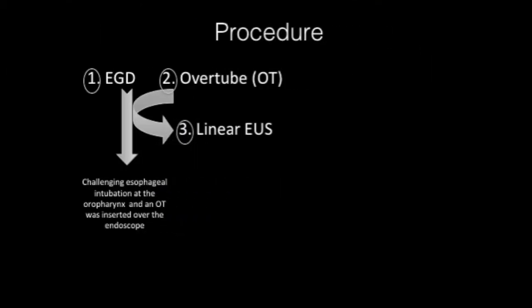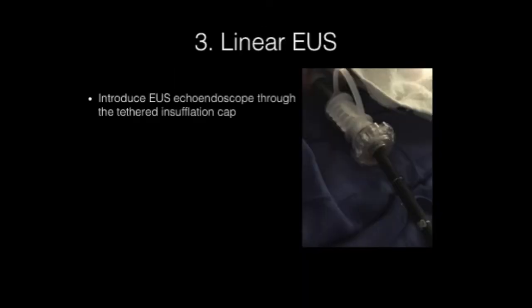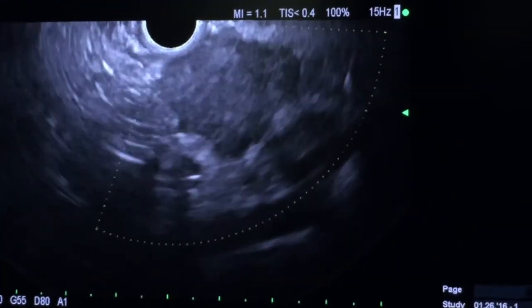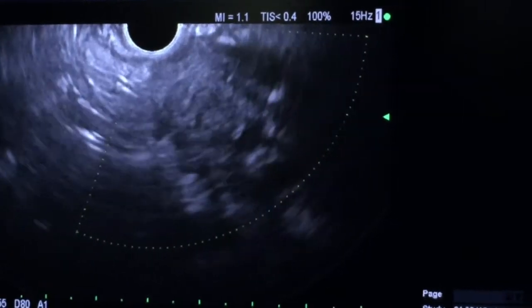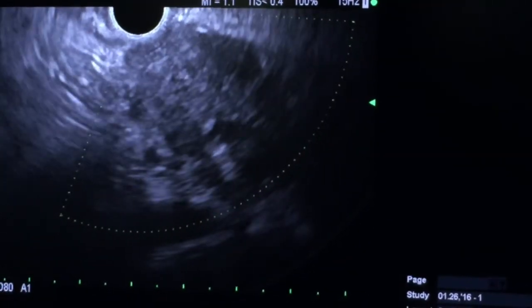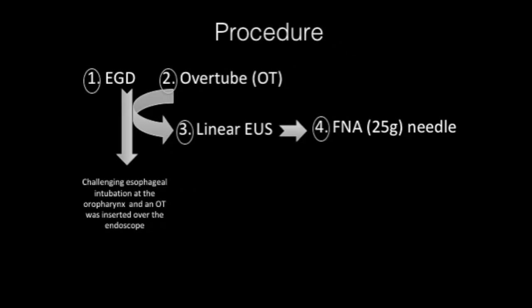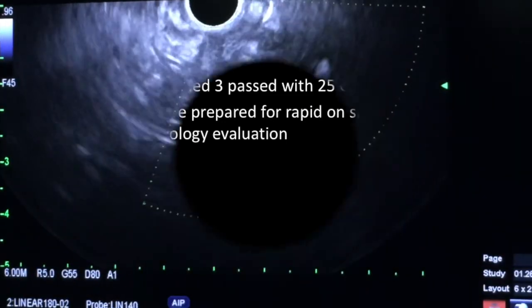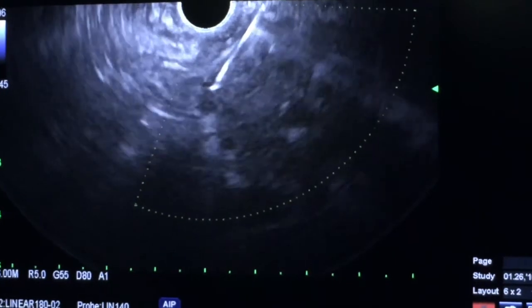the EUS was successfully placed within the lumen of the overtube through the feathered insufflation cap, enabling EUS identification of a hypoechoic 28 x 24 mm pancreatic tail mass that involved the splenic vein but affected neither the SMA nor the celiac tract.